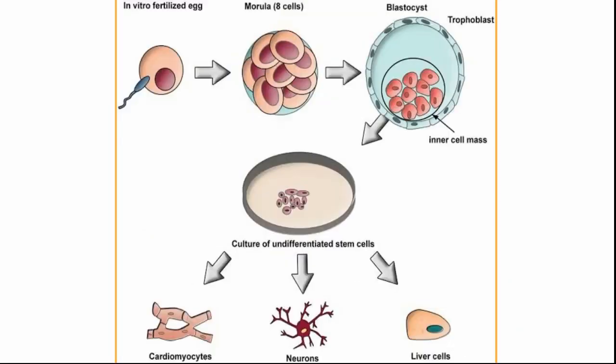Once you retrieve the embryonic stem cells from the blastocyst, then in the laboratory under proper sterile conditions, these undifferentiated cells can be differentiated into different kinds of cells, forming the heart, brain, liver, kidney, and other organs.